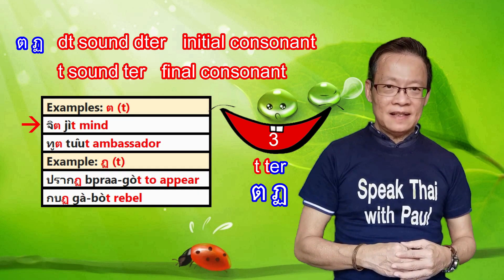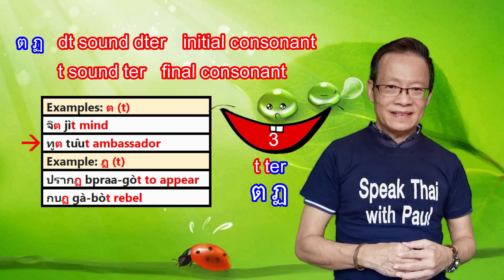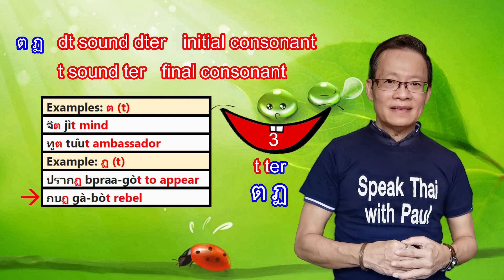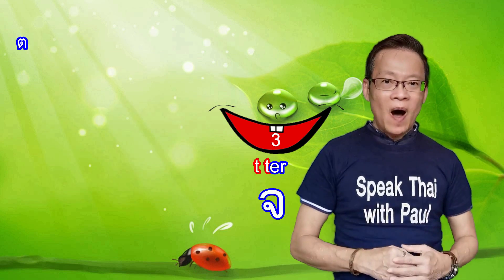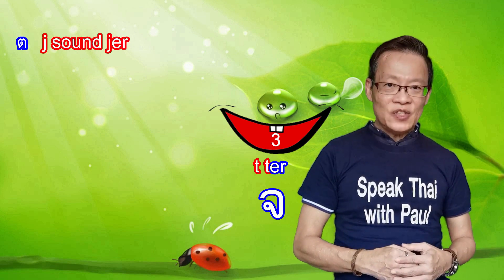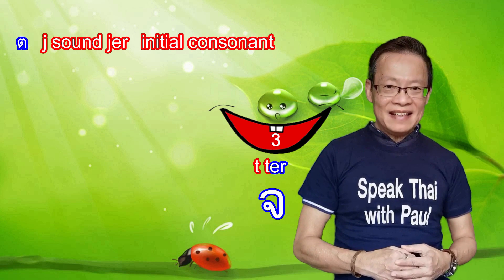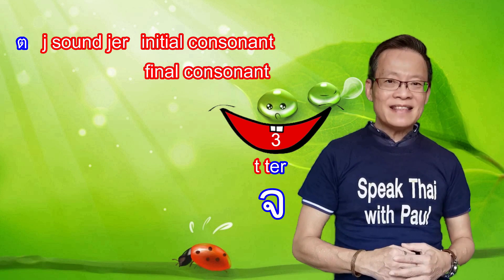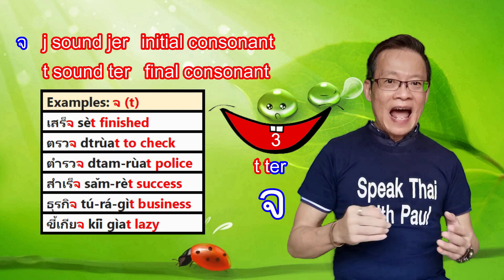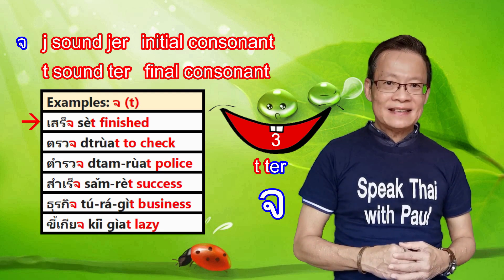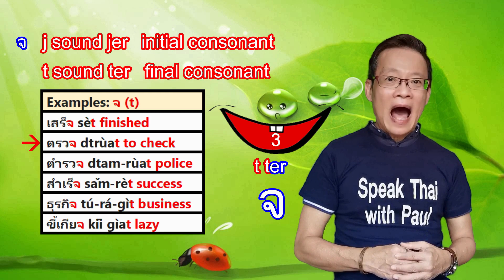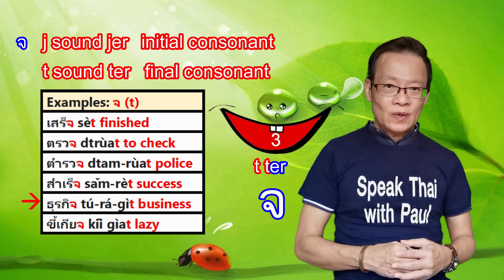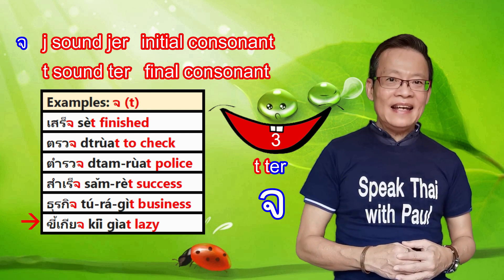Next, 'chor ching' — chor ching is the J sound when used as an initial consonant. However, as a final consonant, it produces the T sound. Examples: 'set' (finish), 'tuat' (to check), 'tamruat' (police), 'samret' (success), 'thurakit' (business), 'khikiat' (lazy). Next, 'chor chang' — chor chang is the CH sound when used as an initial consonant. However, as a final consonant, it produces the T sound. Examples: 'phut' (plant), 'rat' (royal), 'sandwich.'